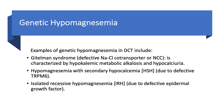Other examples of genetic hypomagnesemia involve problems in the distal convoluted tubule. Here we have Gitelman syndrome. The picture of Bartter syndrome is like taking a loop diuretic — you get hypokalemia, hypomagnesemia, and metabolic alkalosis, and urine calcium is high. Gitelman syndrome is due to a defect in the sodium chloride co-transporter, also known as NCC, so it is like taking a thiazide diuretic.